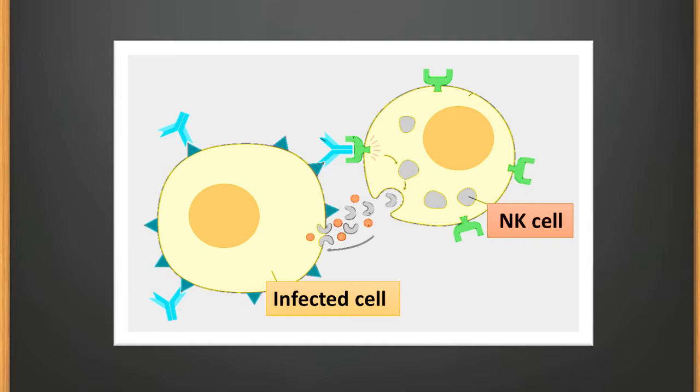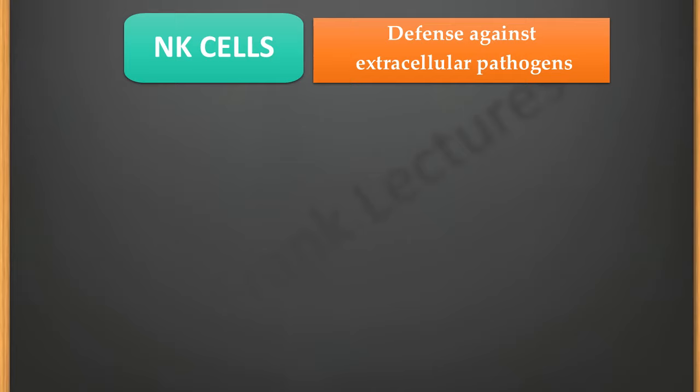Thus NK cells result in killing of the infected cell either by cytolysis or by apoptosis, also known as programmed cell death. Let us now understand how NK cells provide defense against extracellular pathogens. As NK cells are non-phagocytic cells, they cannot kill extracellular pathogens directly.